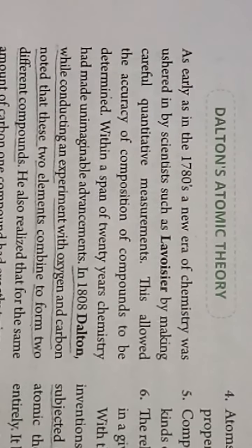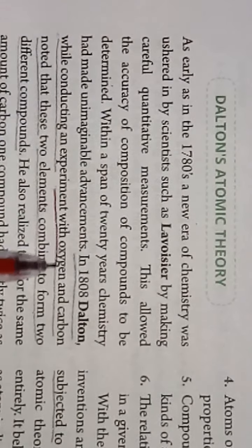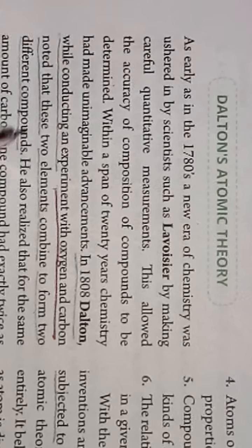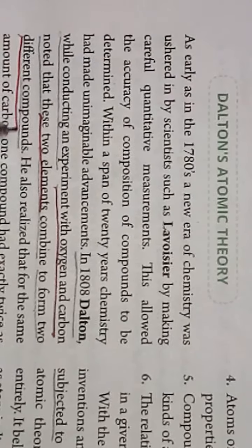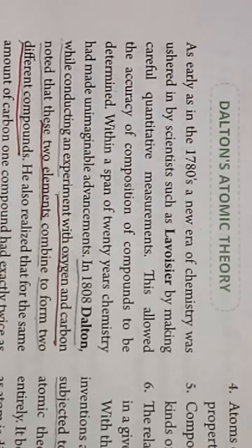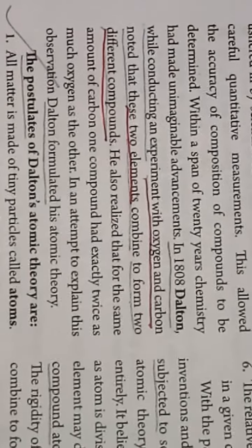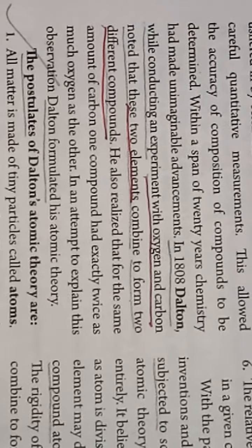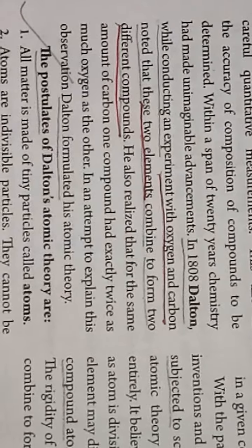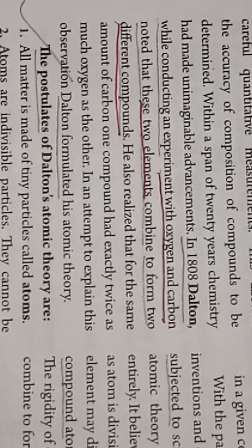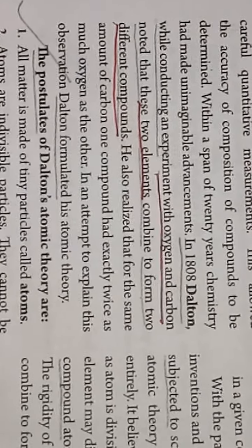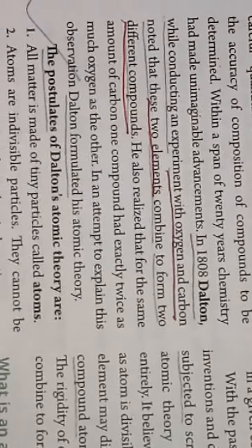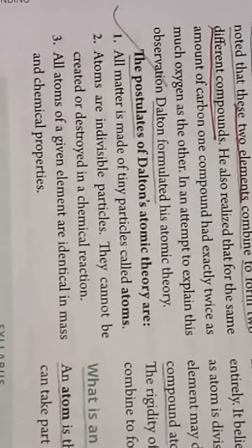In 1880, Dalton, while conducting an experiment with oxygen and carbon, noted that these two elements combined to form two different compounds. He also realized that for the same amount of carbon, one compound had exactly twice as much oxygen as the other. So Dalton formulated certain atomic theory, which is named as the postulates of Dalton's atomic theory.